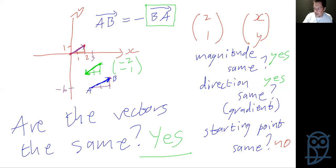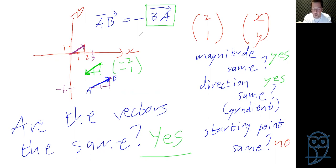Alright. Now, in this vector section, we're going to be looking at adding and subtraction, multiplying by scalars, and a whole bunch of things. None of that will make sense unless you are sure that you have this basic idea of what a vector is, what we're doing with it, whether we can move it around the plane, what vector equals what vector, what we need, how we name it, and how it looks.